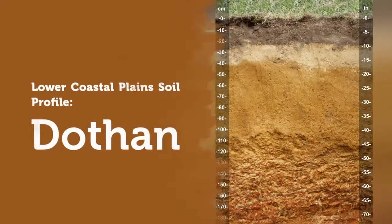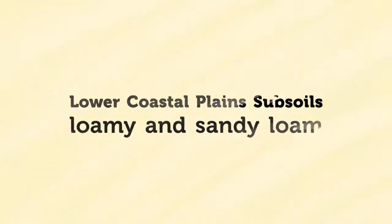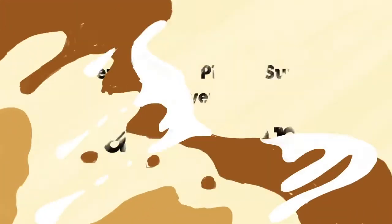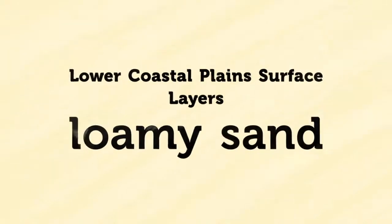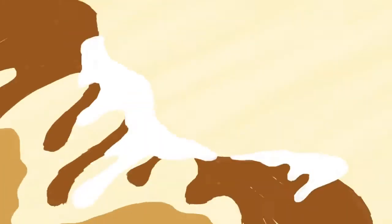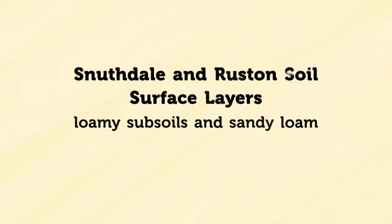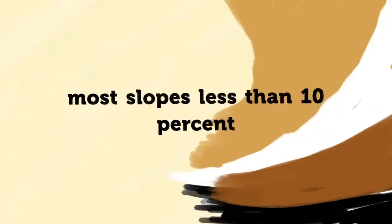Dothan and Orangeburg soils are very extensive in the eastern part of the lower coastal plains. They have loamy subsoils and sandy loam or loamy sand surface layers. Snuffdale and Ruston soils are very extensive in the western part. These soils have loamy subsoils and sandy loam surface layers. Most slopes are less than 10 percent.